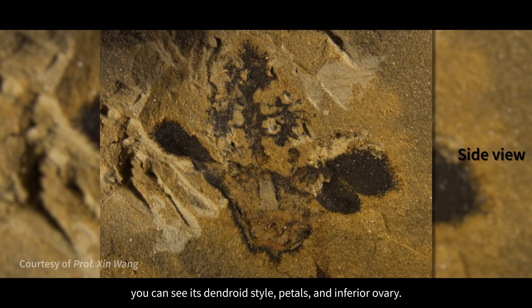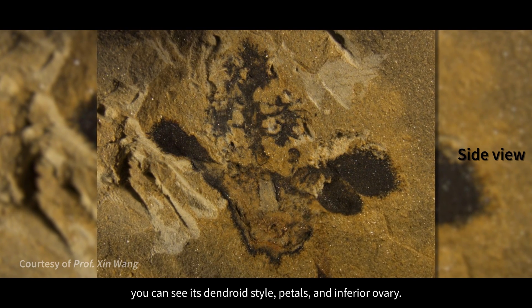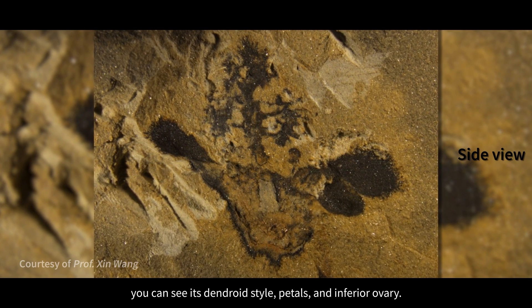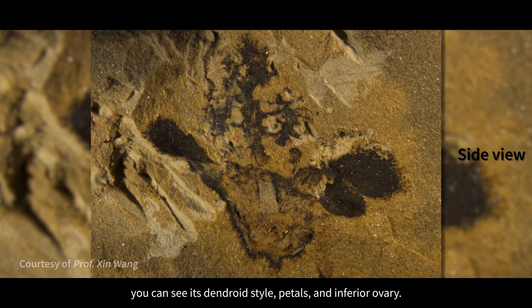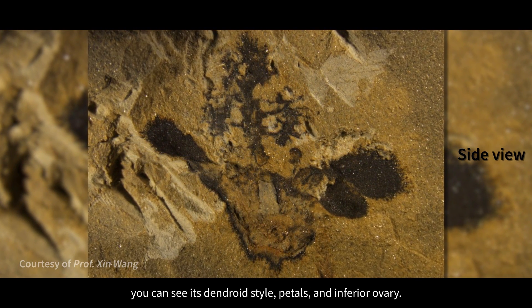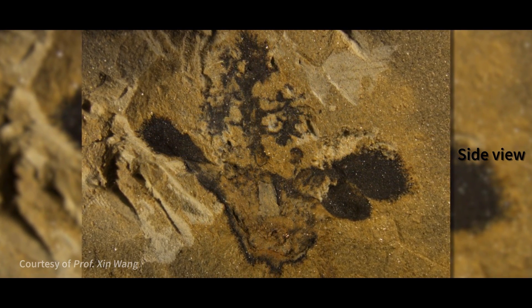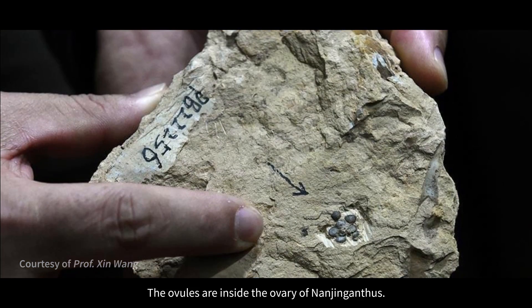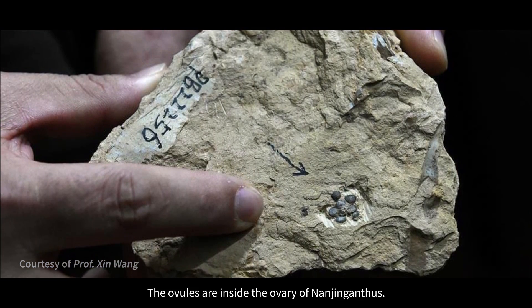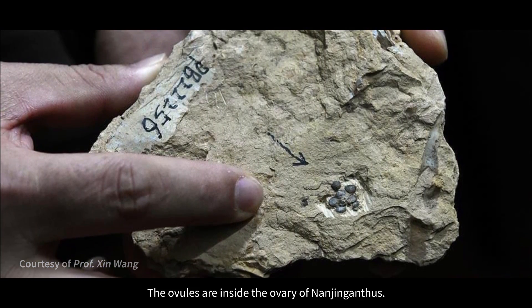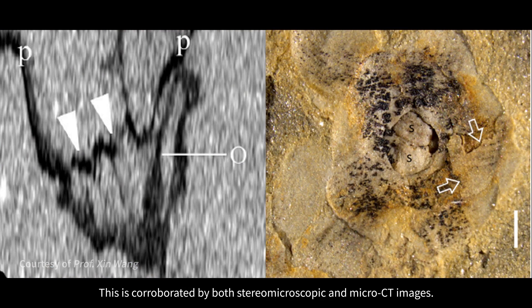From the side, you can see its dendroid style, petals, and inferior ovary. The ovules are inside the ovary of Nanjinganthus, corroborated by both stereomicroscopic and micro-CT images.